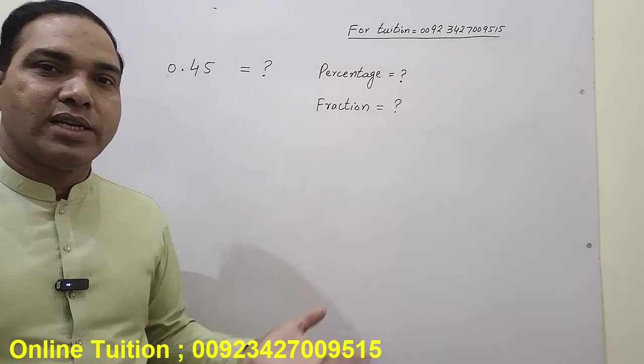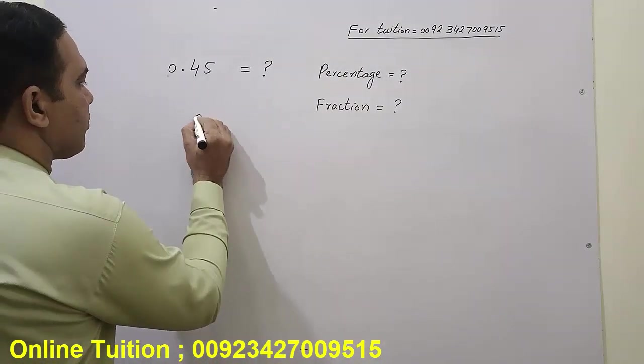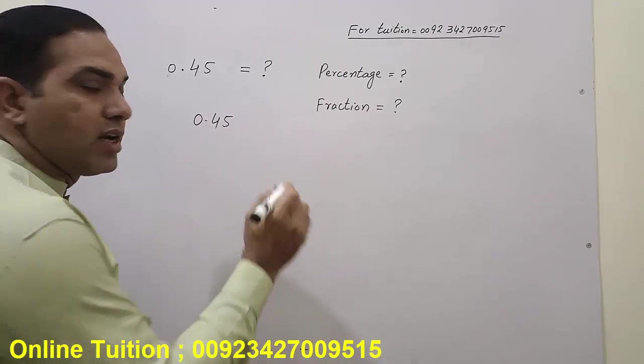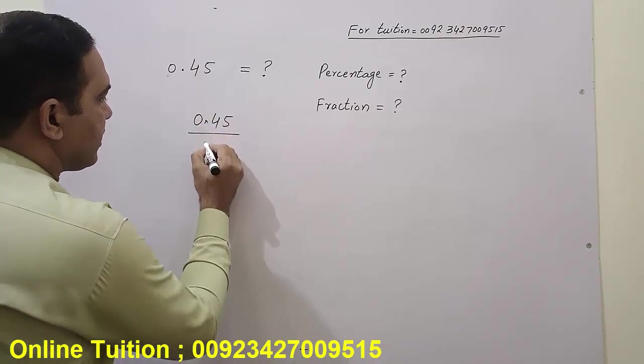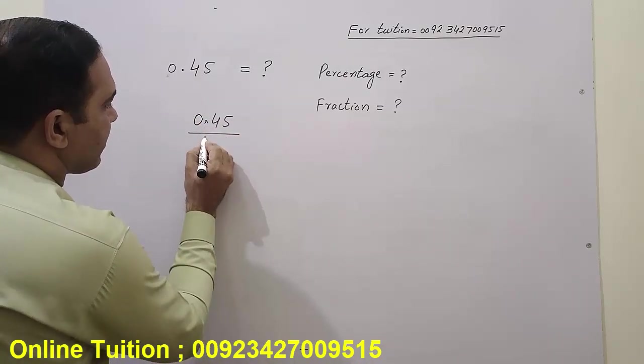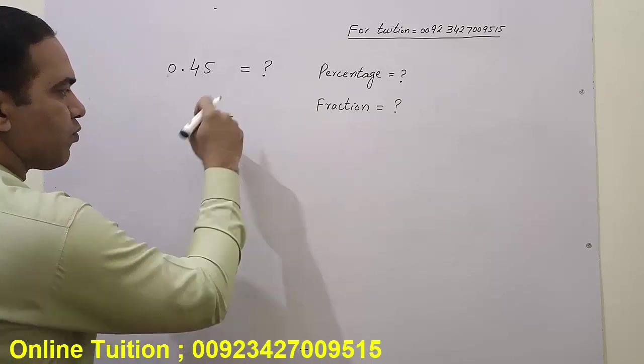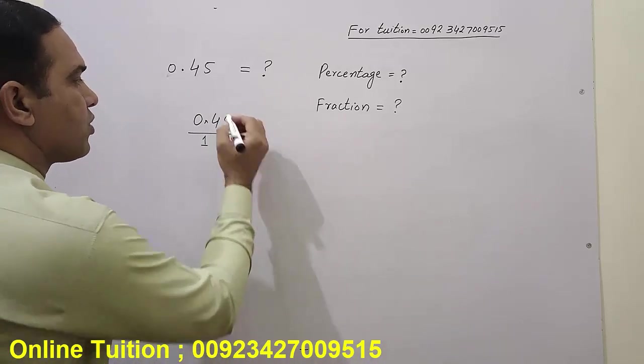So let's start the question: 0.45. The rule is, remove this point. After removing this point, put one over here. After the decimal, how many numbers are there? Just count: one and two. Write zeros over here.